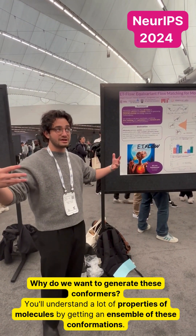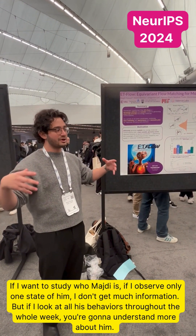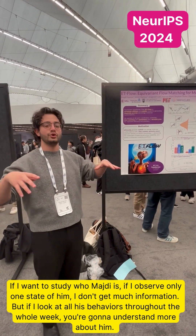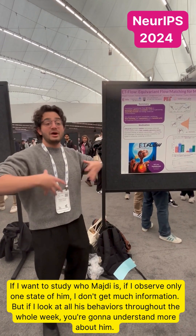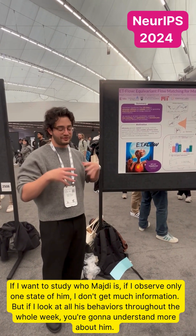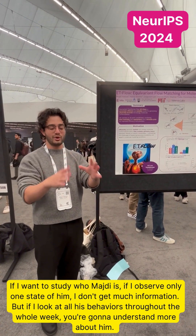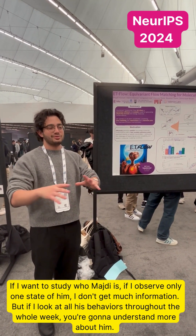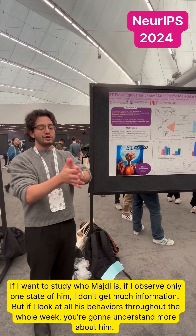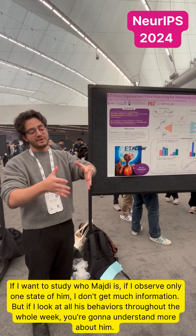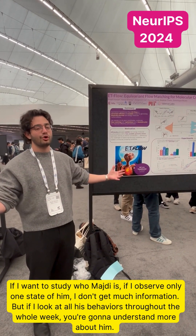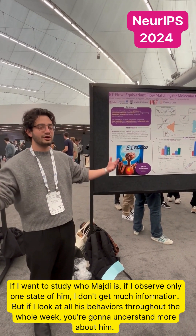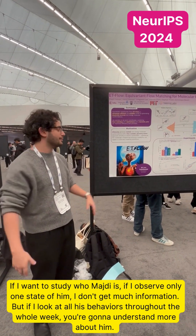The point of generating these conformers is that you understand a lot of properties of molecules by getting an ensemble of these conformations. You can think of it as: if I want to study who Mejli is, if I observe only one state of him, I don't get much information. But if I look at all his behaviors throughout a whole week, you're going to understand more about him.